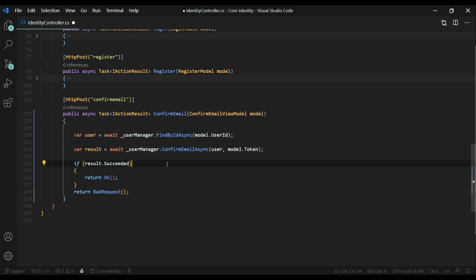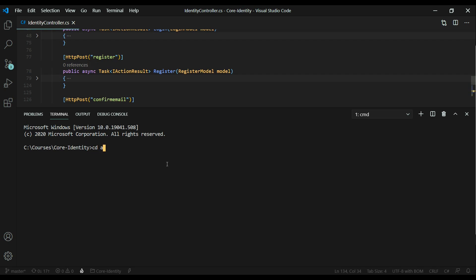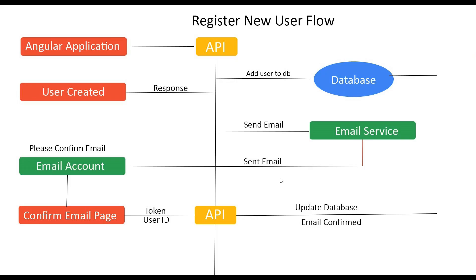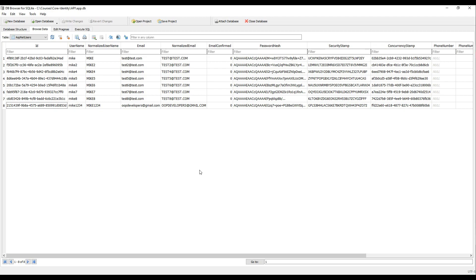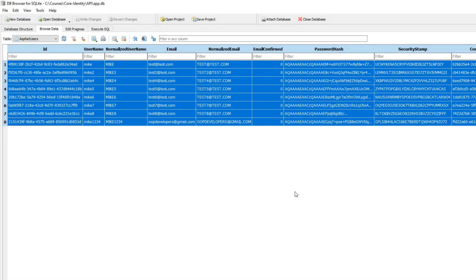Let's test everything out. Make sure you restart the application and fire up your Angular application. The best way to do this is to go through all the steps of creating a new user and confirming the email. We'll start at the beginning within the register form inside the Angular application, make a call to our API, and try to create a brand new user. Before we do all that, let's clean out the database — get rid of all the dummy users and do some housekeeping. We'll select all these users and delete them.